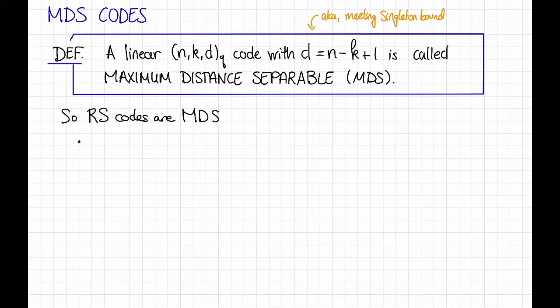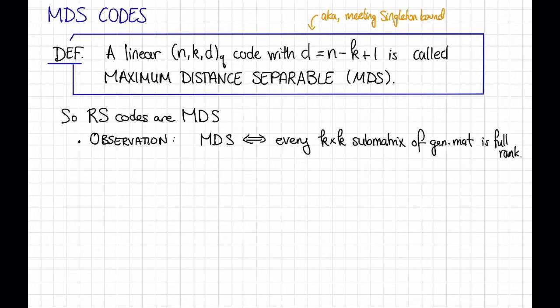One observation about MDS codes is that a code is MDS if and only if every K by K submatrix of its generator matrix is full rank. That is, if the generator matrix looks like this and I choose any K rows, say those ones, then the submatrix formed by just those K rows is going to be full rank.